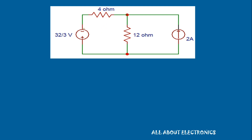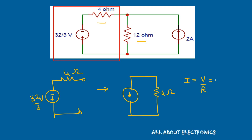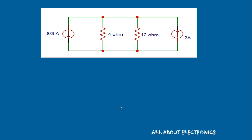Here again, we can convert this voltage source into a current source so that the 4Ω and 12Ω resistors come in parallel, allowing us to simplify the circuit further. The 32/3 V voltage source with 4Ω in series is converted into a current source with 4Ω in parallel. The value of this current source I = V / R = (32/3) / 4 = 8/3 A. The equivalent circuit now has an 8/3 A current source with a 4Ω resistor in parallel.